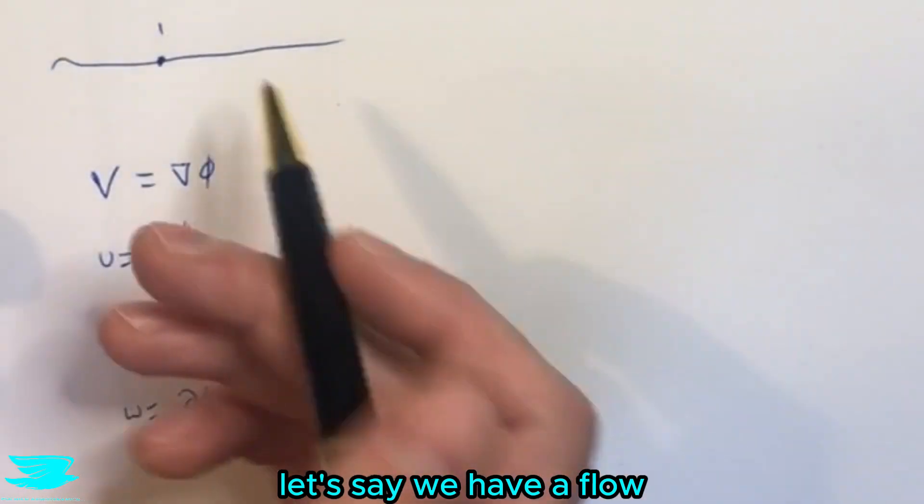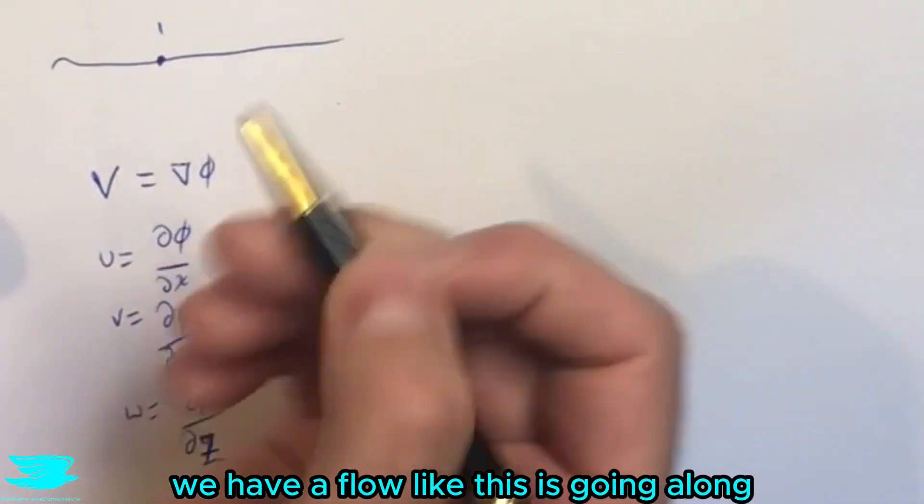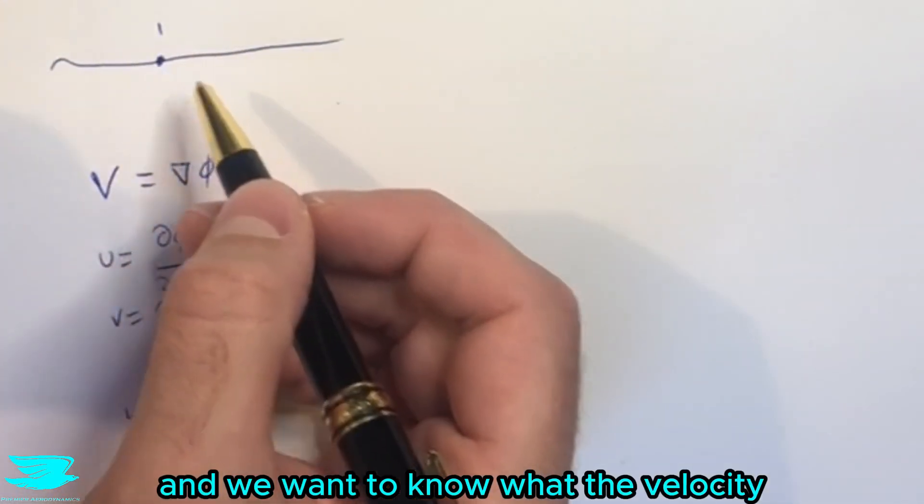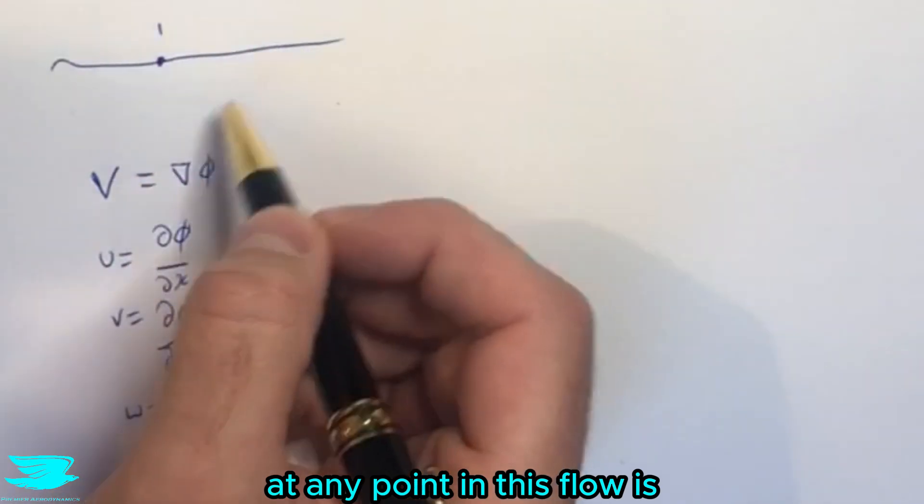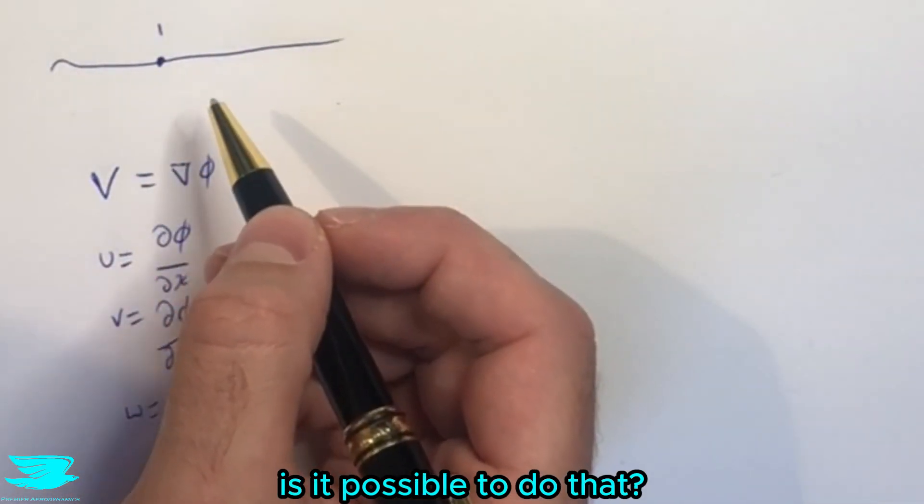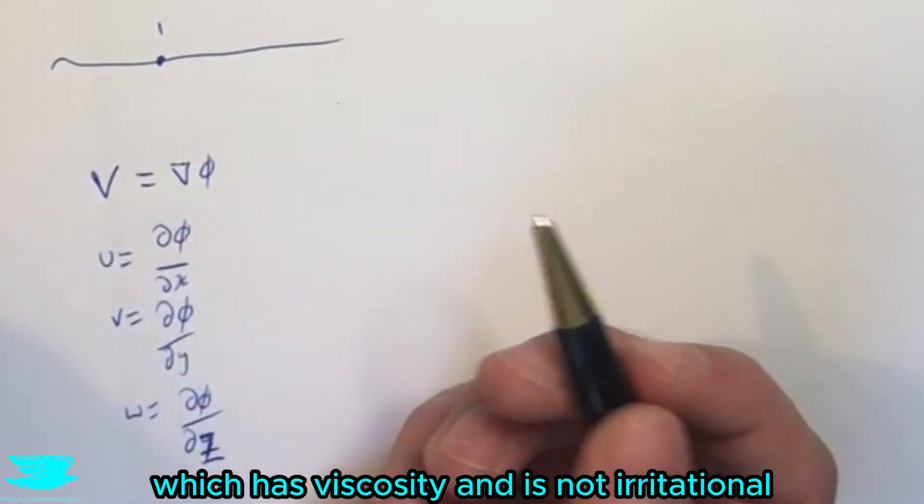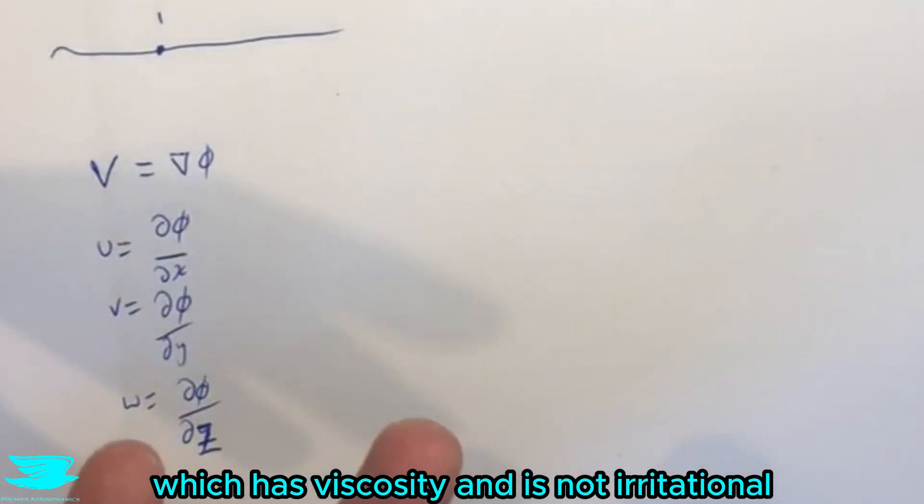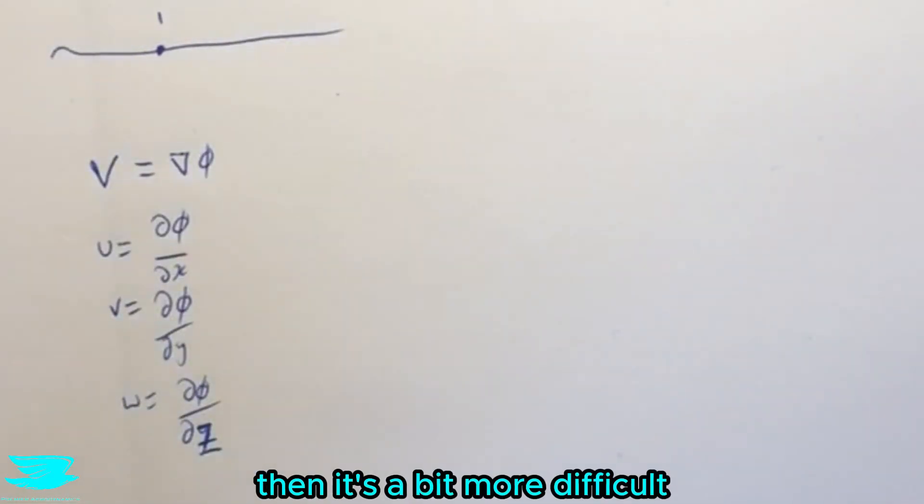So to give you an idea, let's say we have a flow. We have a flow like this just going along and we want to know what the velocity at any point in this flow is. Is it possible to do that?